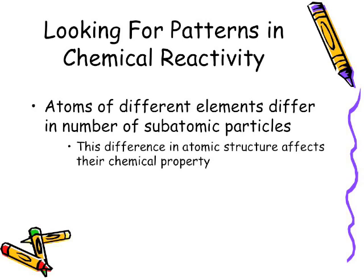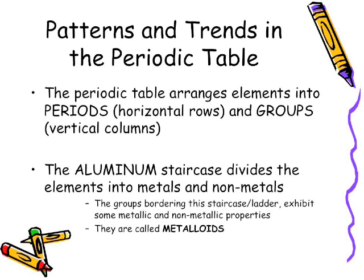We're looking at the arrangement of the periodic table and it's arranged uniquely to show reactivity or increase in reactivity between different atoms. Few patterns and trends found in the periodic table. The periodic table arranges elements into periods which are the horizontal rows and groups which are the vertical rows.